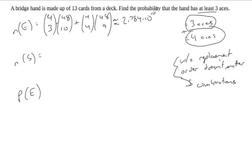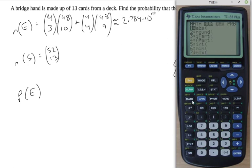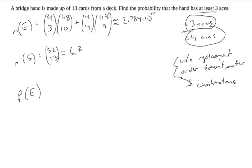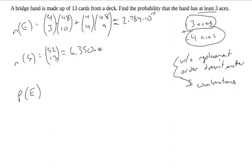The total number of hands that you could draw—this is going to be an even larger number. There's 52 cards in a deck, and we're drawing 13 of them. So 52 choose 13. 52 choose 13 gives us 6.35 times 10 to the 11th. 6.350 times 10 to the 11th.